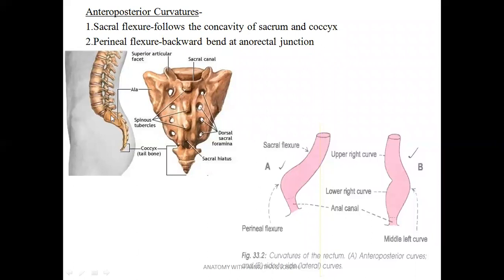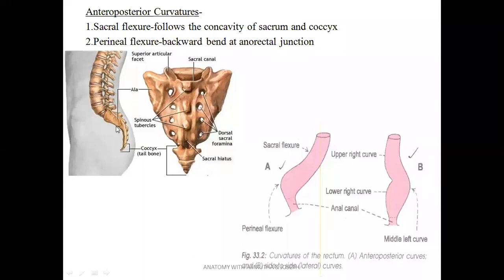You can see the lower part of the sacrum and the coccyx. Because this vertebral column has curvature, the rectum which is near to it also has a curvature, and that is the anteroposterior curvature. Just imagine that the rectum position is like this — this is the curvature that it makes.